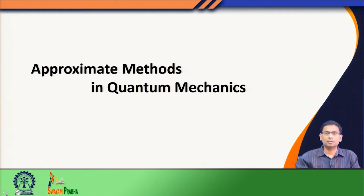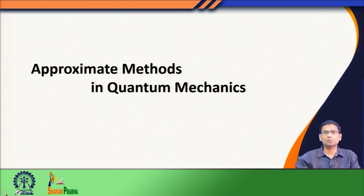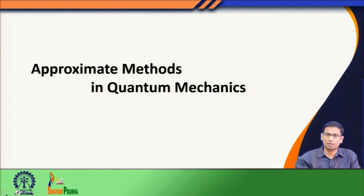Today in today's class, we will see that when you have any system which is more complex than the hydrogen atom — for example, in particular when we have more than one electron in our system — in that case we will not be able to solve the Schrödinger equation exactly. And in such a case, as you know, in chemistry we deal with heavy elements and also with molecules which certainly have more than one electron.